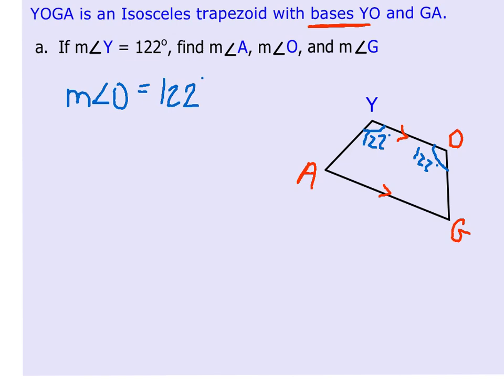To find angles A and G, we do know that they're congruent, but we have to have a way of figuring out what they are. Remember back to section 6.1, we know that a quadrilateral, a four-sided shape, has to add up, the angles have to add up to 360 degrees.